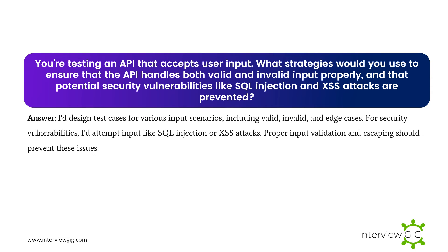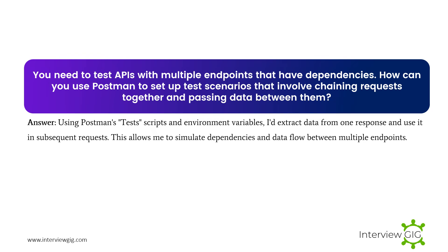You're testing an API that accepts user input. What strategies would you use to ensure the API handles both valid and invalid input properly, and that potential security vulnerabilities like SQL injection and XSS attacks are prevented? I design test cases for various input scenarios including valid, invalid, and edge cases. For security vulnerabilities, I'd attempt inputs like SQL injection or XSS attacks — proper input validation and escaping should prevent these issues.